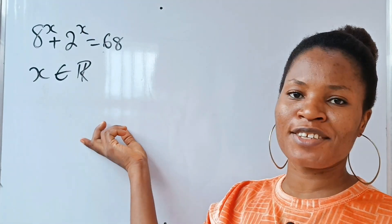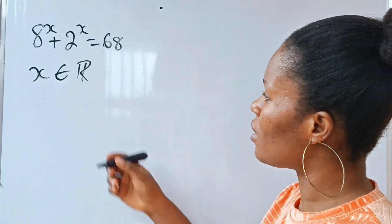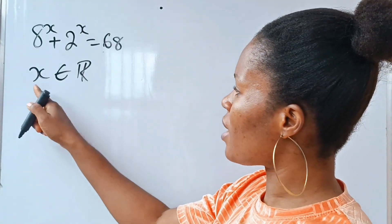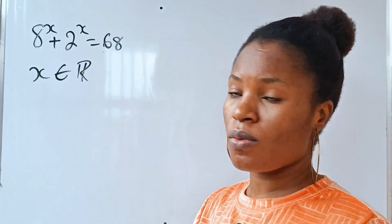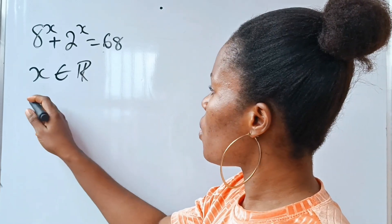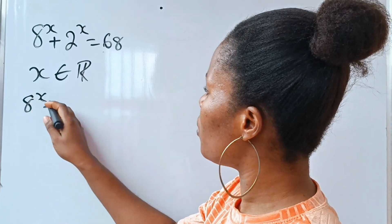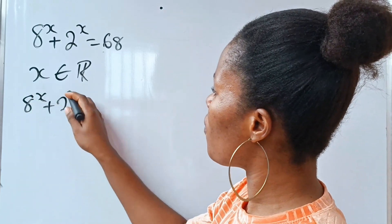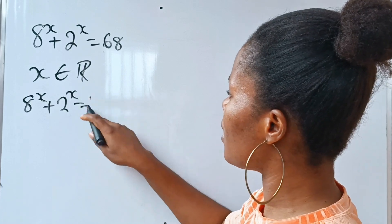Let's solve this Harvard entrance exam question altogether. We are asked to find x if x is real. We have 8 to the power of x plus 2 to the power of x is equal to 68.